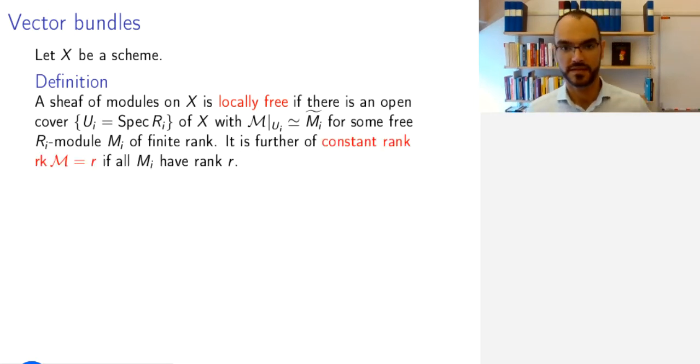And if this rank, which in general can vary with the various U_i, is constant, meaning that all M_i have rank r over their respective base rings, then we say that the sheaf of modules is a locally free sheaf or a locally free module of constant rank r.